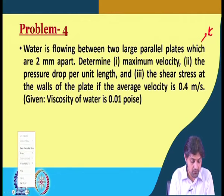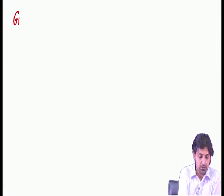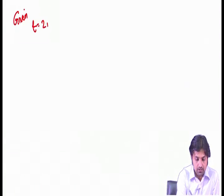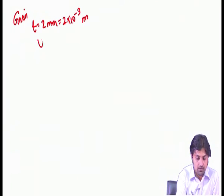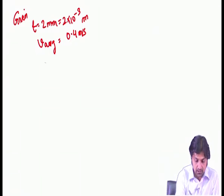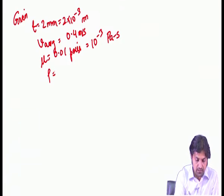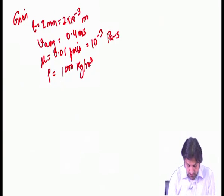To solve this, I will go to the white screen and write down what is given. T is 2 millimeters or 2×10⁻³ meters. The average velocity is 0.4 meters per second. Mu is given as 0.01 poise, which divided by 10 gives 10⁻³ Pascal-seconds. The density of water is assumed to be 1000 kilogram per meter cube.